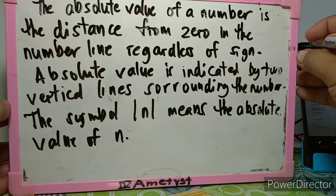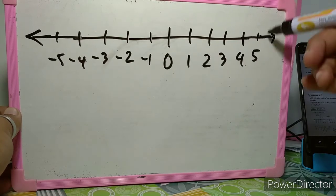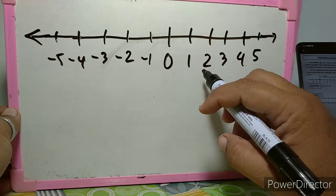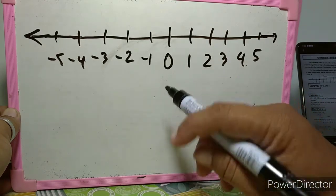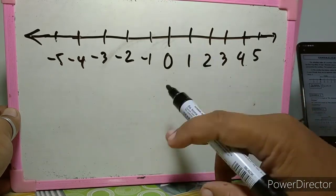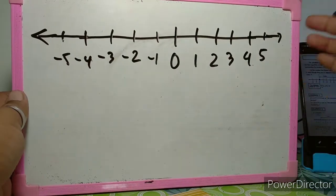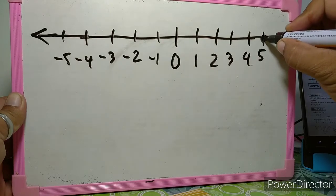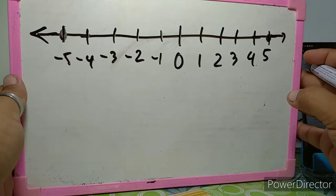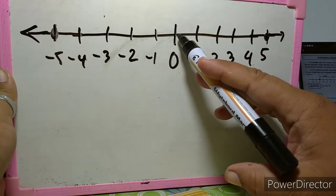Let us have some illustration to understand absolute value. A number line is composed of positive and negative numbers, where the origin is zero. By getting the absolute value of a certain number, we are going to get the distance of a point from zero.